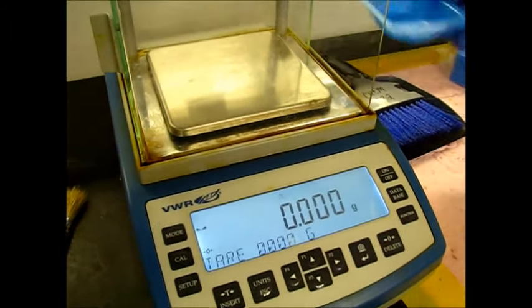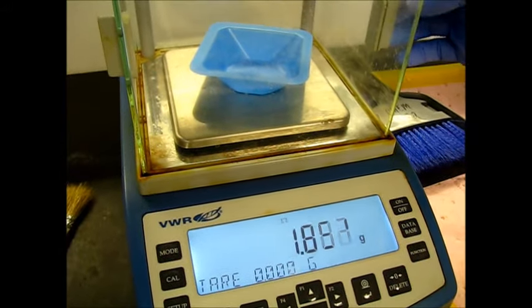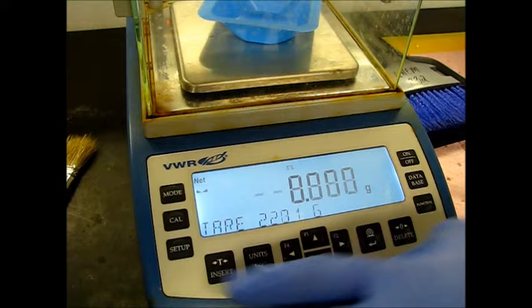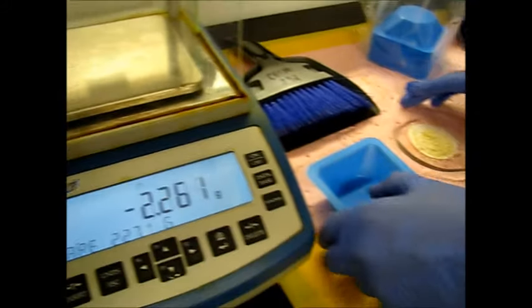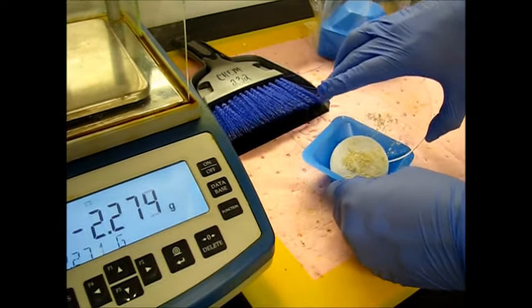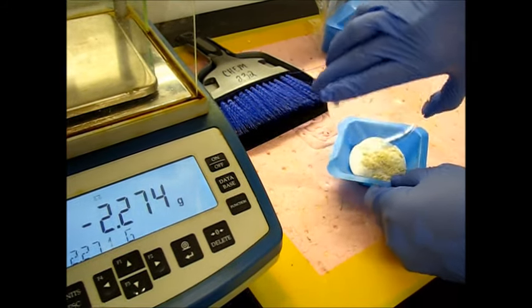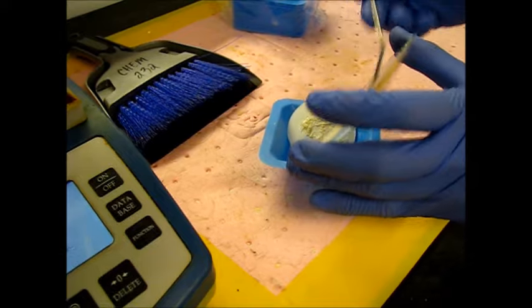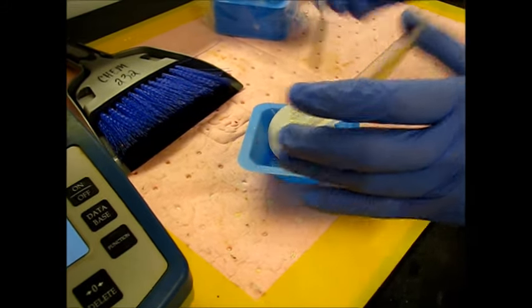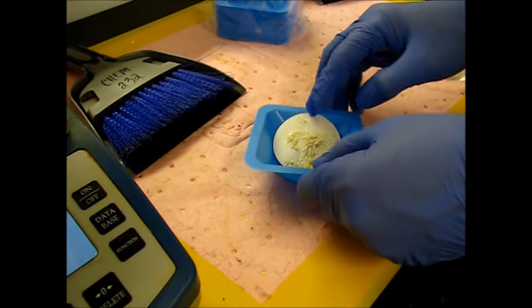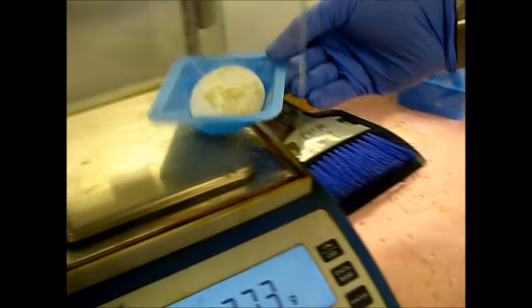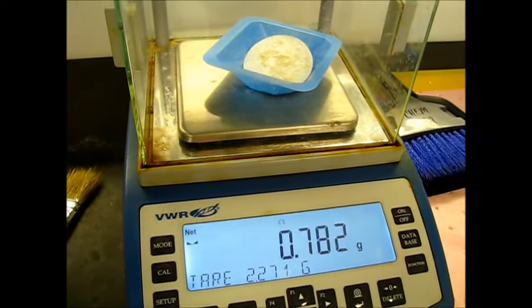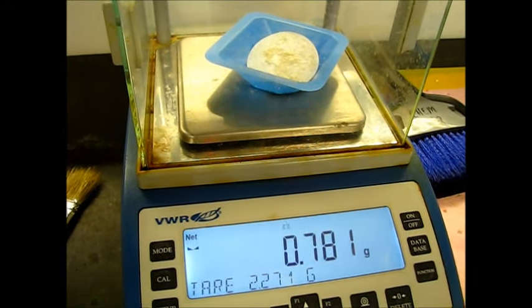So we're going to go ahead and get the mass of our product now that it's out of the oven. So we're going to tare the weighboat first. And then we're going to add everything in here. So 0.781. Cool.